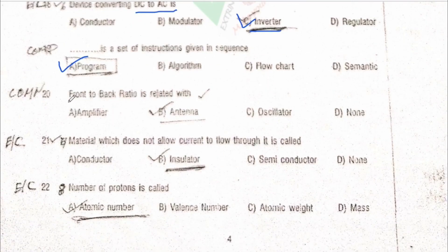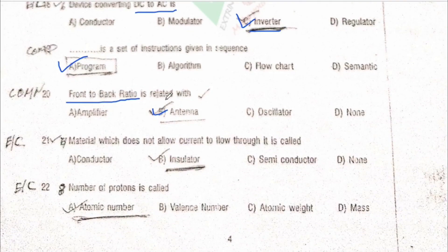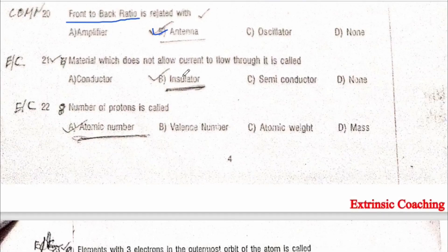Front-to-back ratio is important in antenna topics. This subject is not strictly in your syllabus, but questions from antenna topics are sometimes asked outside the syllabus in every paper. Next: material which does not allow current to flow through it is called an insulator. A conductor allows current; a semiconductor sometimes allows and sometimes does not — hence it is called a semiconductor.